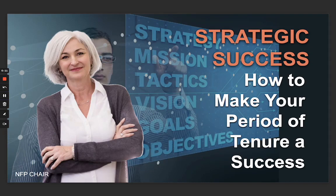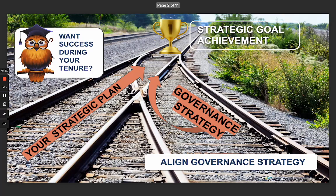It's really about how to make your period of tenure a success. It's very aligned to what we were talking about yesterday. To achieve success during your tenure, strategic goal achievement is that definition of success — if those goals have been clearly defined in your strategic plan. What we've always maintained is that governance strategy is your best bet.